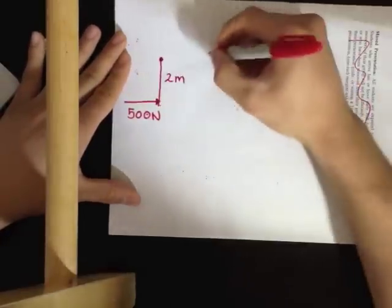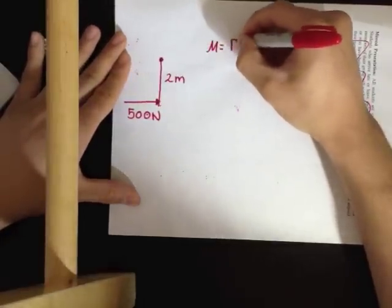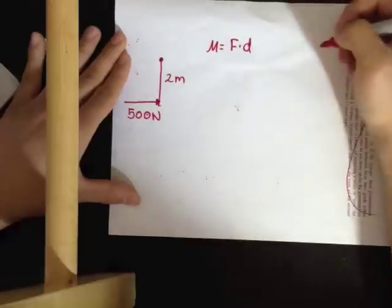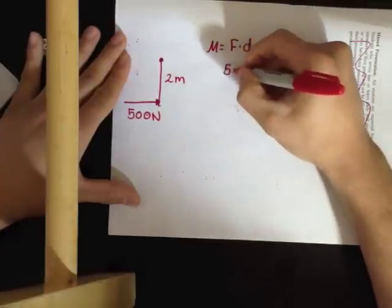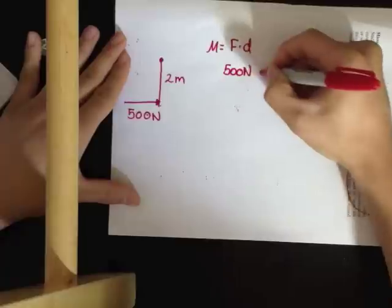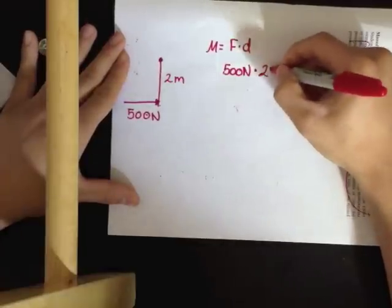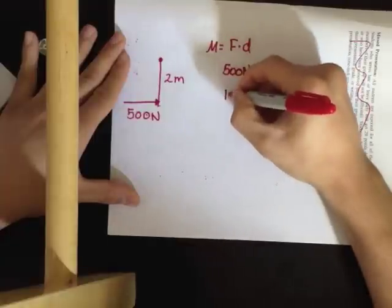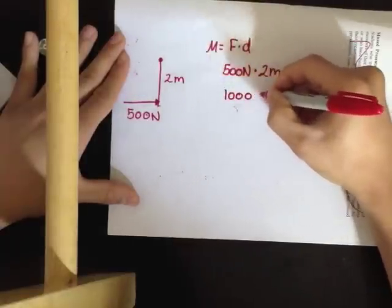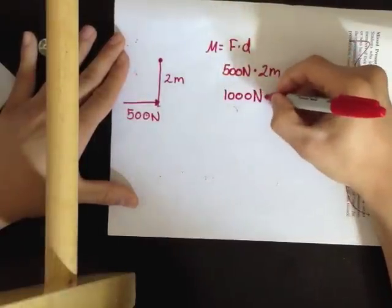Basically, you know that moment is force times distance. So your force is 500 newtons and your distance is 2 meters. We got the easy part out of the way. Your moment is 1,000 newton meters.